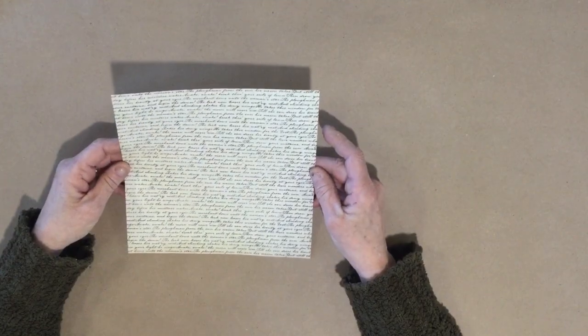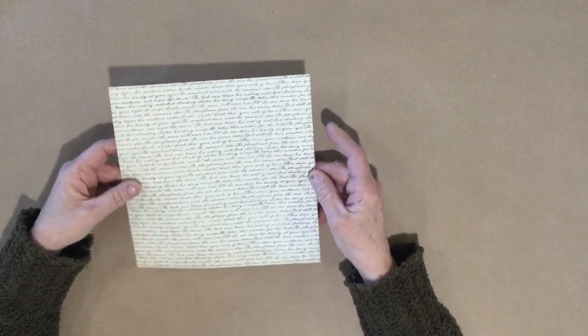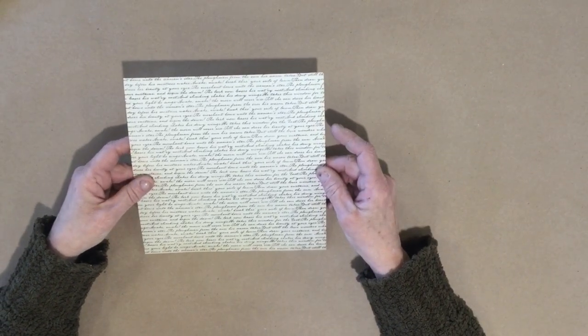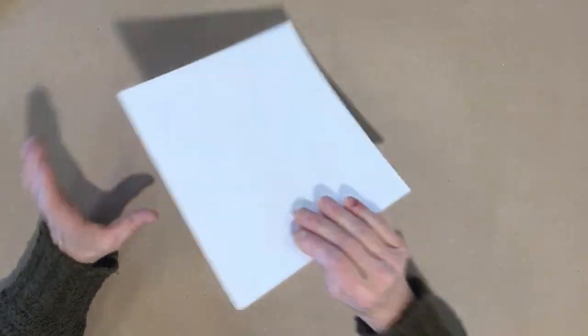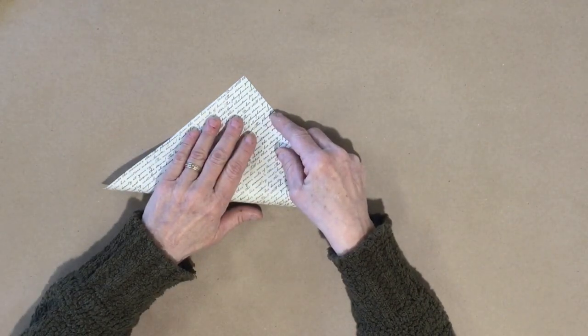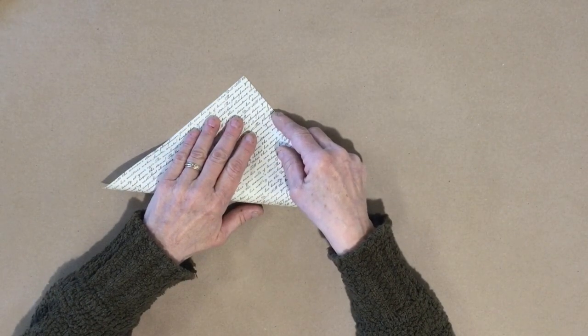So you want to start with a square piece of paper, whether it's already embellished like a scrapbook paper, or it's just a blank sheet of paper and you can stamp it and embellish it later. I'm using an 8x8 here, but the size you use is just going to determine how large your envelope is at the end.